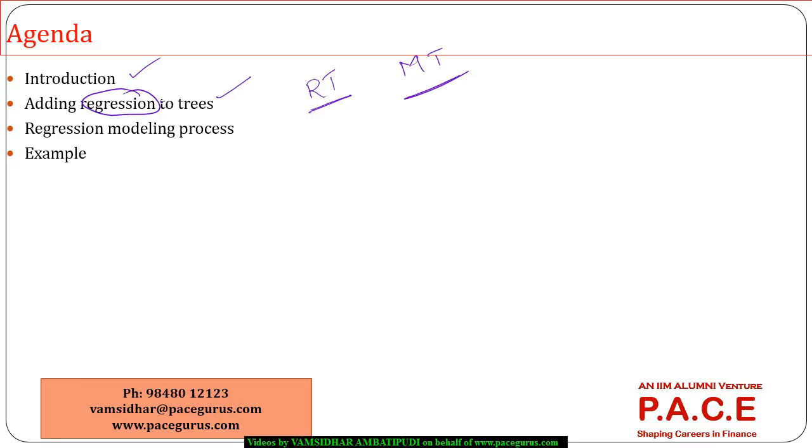How do I really add in the regression to the trees? What are the kinds of benefits and what are the weaknesses that are associated with adding the regression model to the tree model? Then we will try to understand the regression modeling process. Once the conceptual aspects are quite comfortable, we will continue with the same example which we have discussed for the regression modeling so that we can do the comparisons quite comfortably.